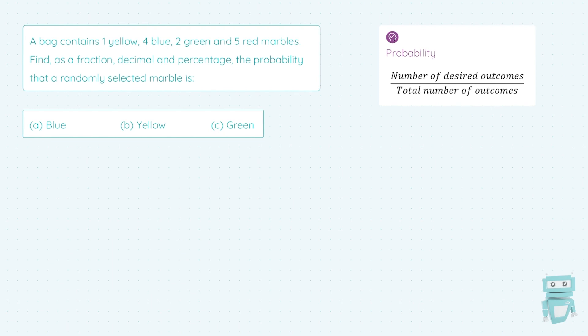Now, let's take a look at the formula. The probability of something happening is the number of desired outcomes over the total number of outcomes. And let's see a question here to check this out in action. I'm told a bag contains 1 yellow, 4 blue, 2 green, and 5 red marbles. Find as a fraction, decimal, and percentage, so they want all three here, the probability that a randomly selected marble is part A blue.